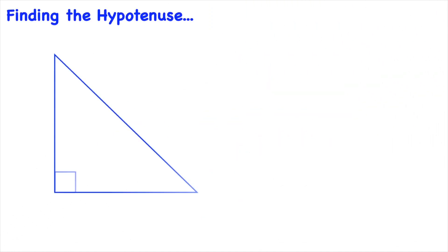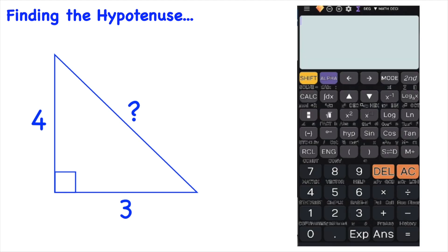So say you were given this question. So you have the base length which is 3 units or 3 cm or whatever the unit is and you have the height of the triangle which is 4 and you want to find the length of the hypotenuse. All you need to do is get your calculator.